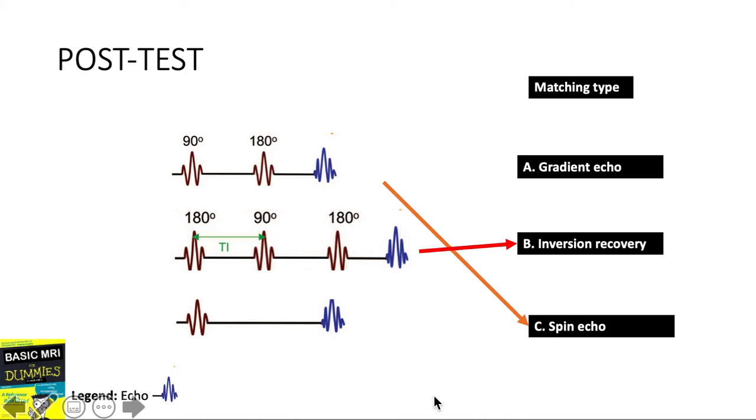The last question: we have here an excitatory pulse followed by an echo but there is no 180 degree refocusing pulse. There is however an echo produced, so this echo must have been produced by using a magnetic gradient. The correct answer is gradient echo.